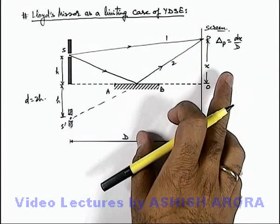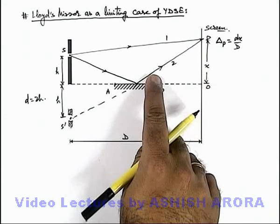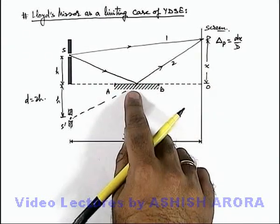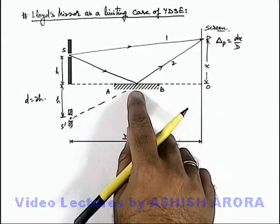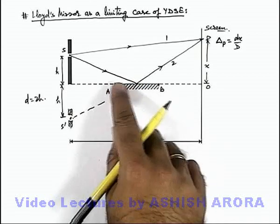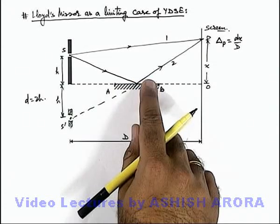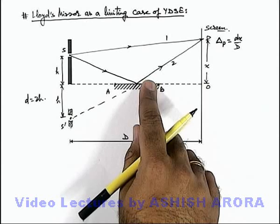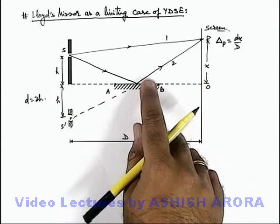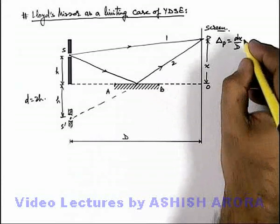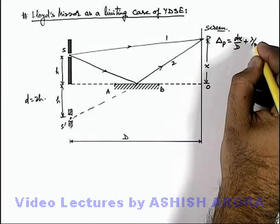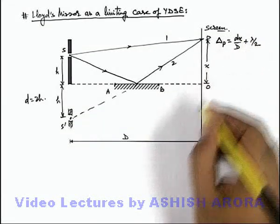One more thing we must not ignore here: ray 2 is reflected from this mirror, that is a denser medium. So whenever a light wave is reflected from the surface of a denser medium, an additional phase of π radians or a path of λ/2 is added into it. So at point P, the total path difference in the two waves is dx/D plus λ/2.